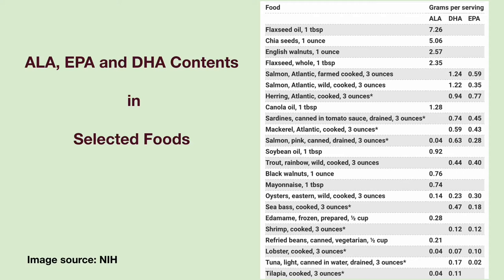In contrast, DHA and EPA are present in fish, fish oils, and krill oils. Fatty fish such as salmon, herring, sardines, mackerel, trout, etc. contain high amounts of DHA and EPA.